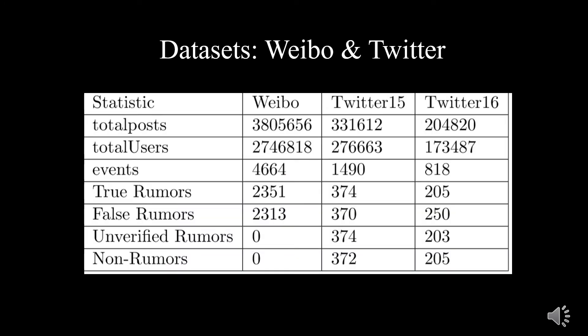In our experiment, we use Twitter and Weibo datasets. The Twitter datasets have four labels: non-rumor, false rumor, true rumor, and unverified rumor. The Weibo dataset only has two labels: rumor and non-rumor.